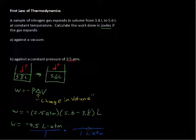But you can find that the conversion is that for every one liter atmosphere of work, we have 101.3 joules. So 101.3 joules per one liter atmosphere. That crosses out the liter atmospheres, we're left with joules. We multiply 4.5 times the 101.3.